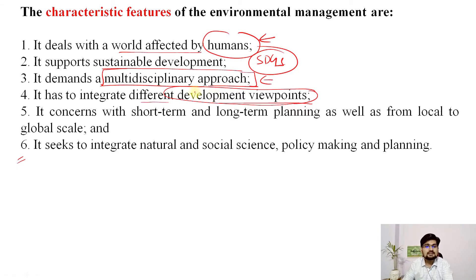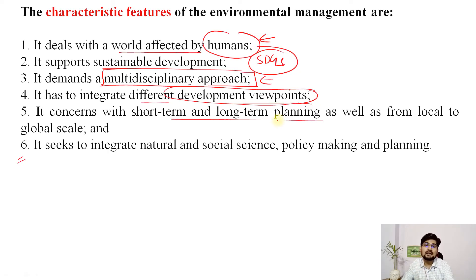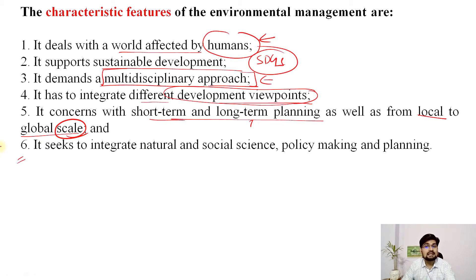Environmental management concerns both short-term and long-term planning. We have sustainable development goals until 2030 and certain goals for 2050 as well. Management must operate at different scales — from local to regional to global — addressing local problems as well as global problems, and finding solutions accordingly at all these planning scales.